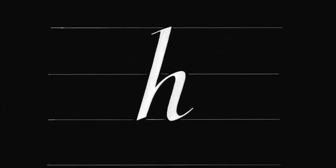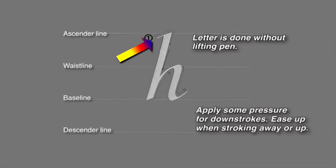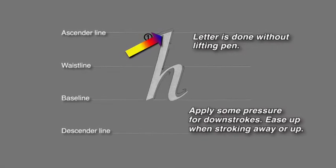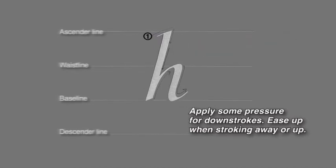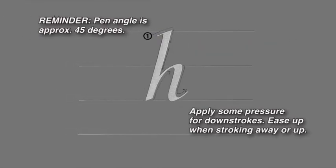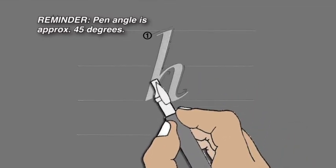The letter H begins just below the ascender line. It is done without lifting the pen. As you begin, apply some pressure for down strokes and ease up when stroking away or up. This creates the graceful finish to each letter.